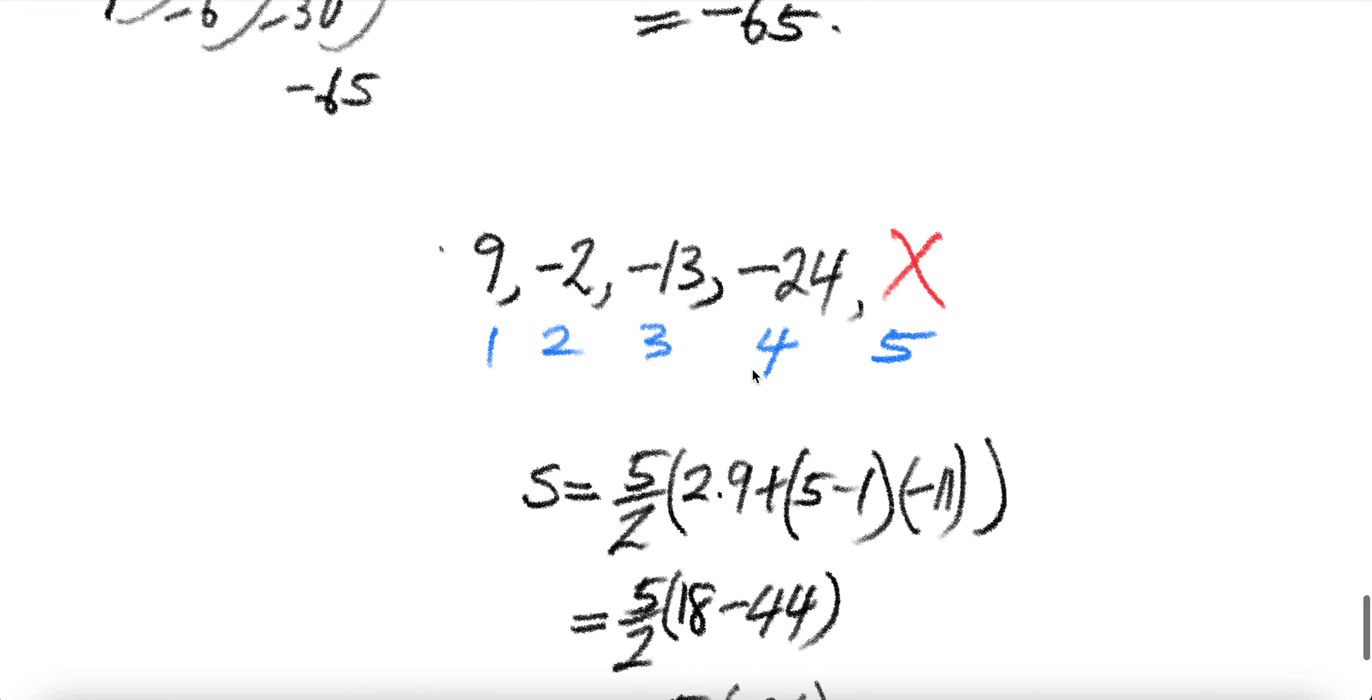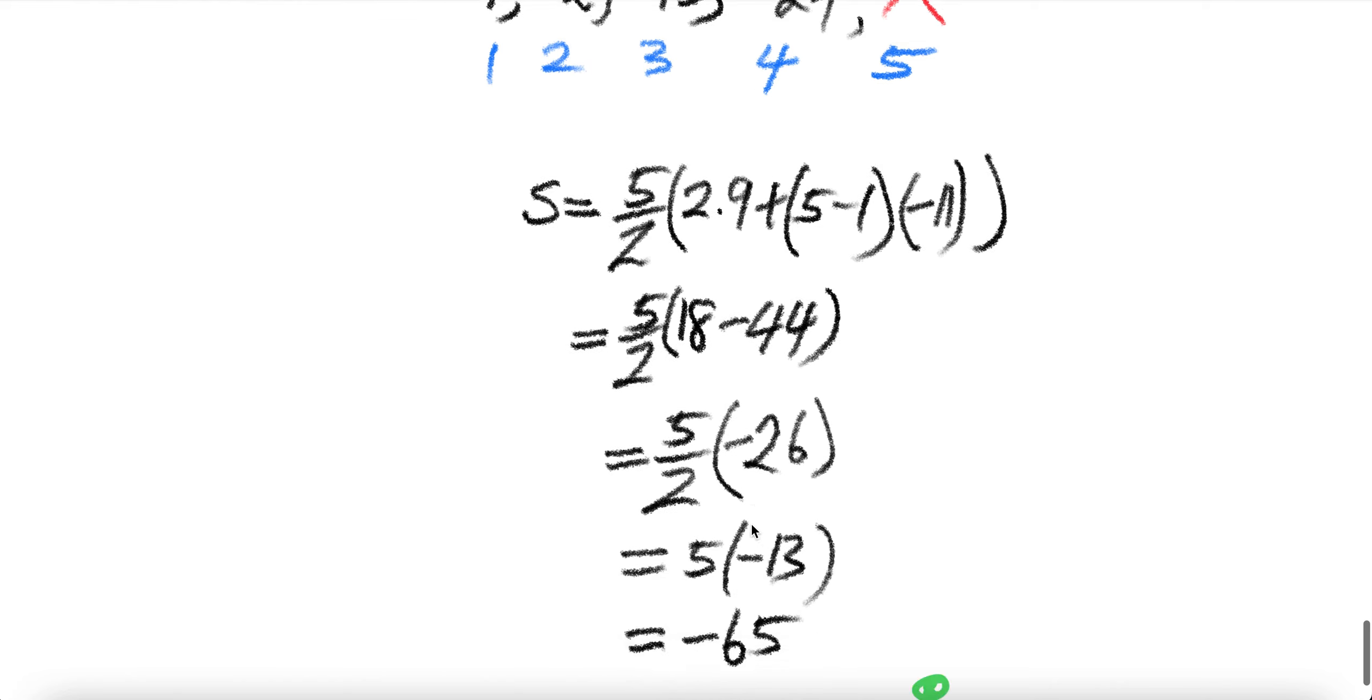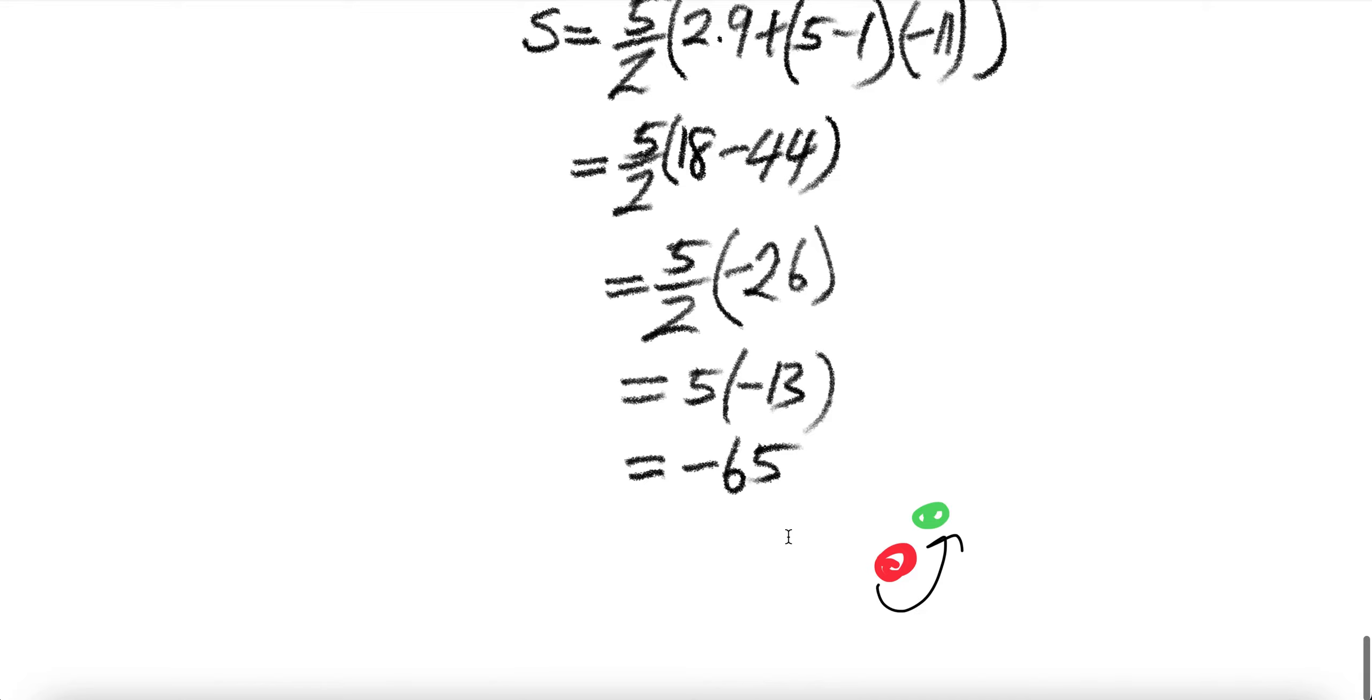Say this is not given. If this is not given, we can use the other formula. Number of terms five divided by two, twice the first term plus the number of terms minus one times the common difference, which is negative 11. You know how to do that. And you also get negative 65.